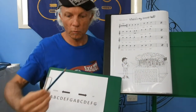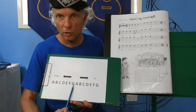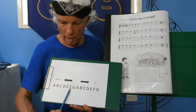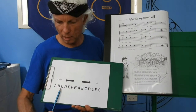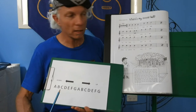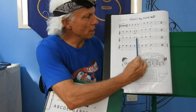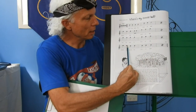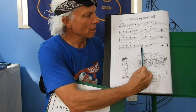Then we go back down: G, F, E, D, C. And again: G, F, E, D, C.